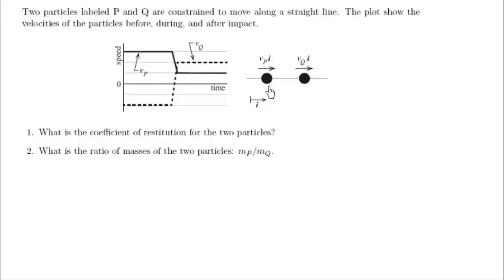So I've got two particles that I label P and Q. They're constrained to move along a straight line. The velocity of particle P I call VP in the i-hat direction, and VQ in the i-hat direction is the velocity of particle Q.